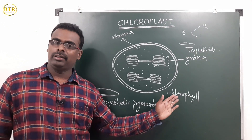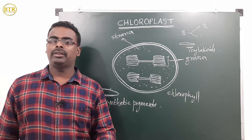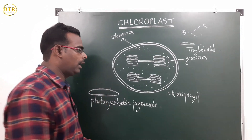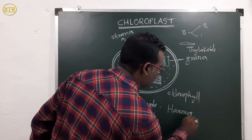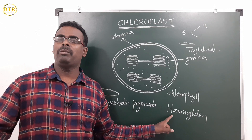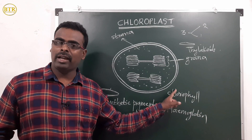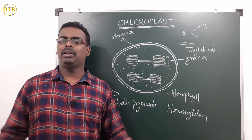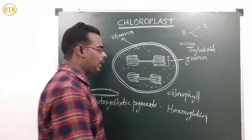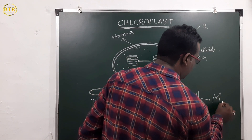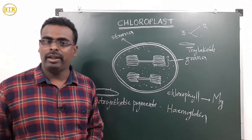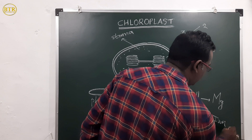The chlorophyll structure is similar to the pigment present in our body — the pigment in red blood cells, which is called hemoglobin. Chlorophyll is present in plants; hemoglobin is present in red blood cells. In chlorophyll structure, a magnesium atom (Mg) is present. In hemoglobin structure, an iron atom (Fe) is present.